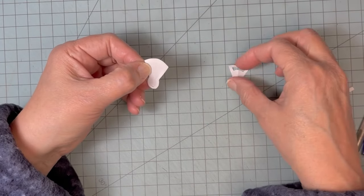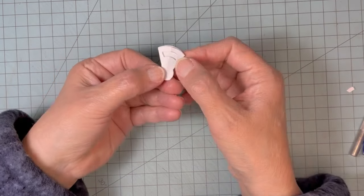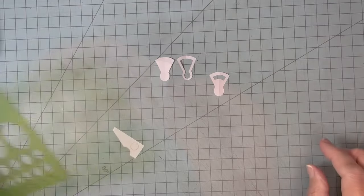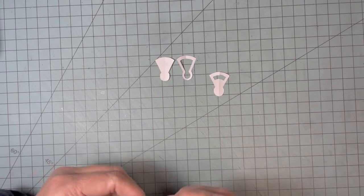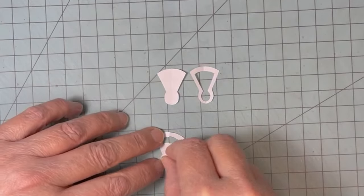I'm showing you the order that the pieces go in: the base, the frame, and then the front or the back. I cut out a little circle to be a decorative piece on the front.